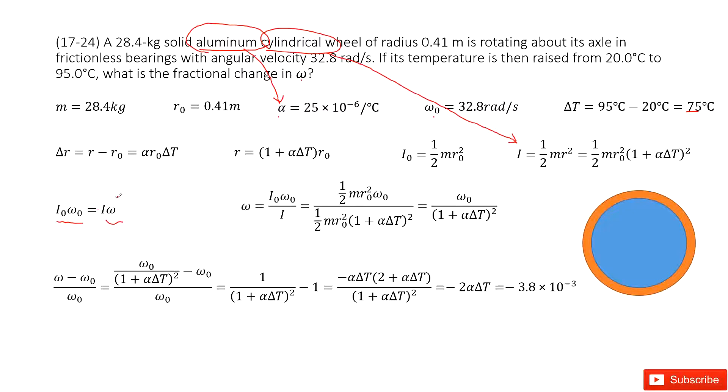Now we look at i. So for i, the moment of inertia at the final, is one half mR squared. This r is the radius at the temperature 95 degrees.